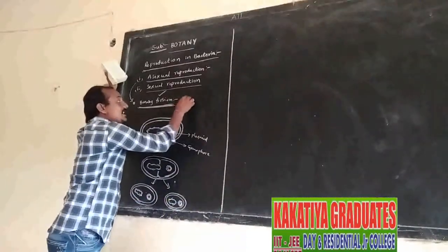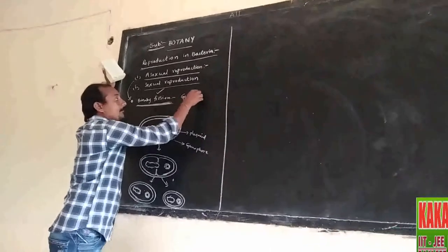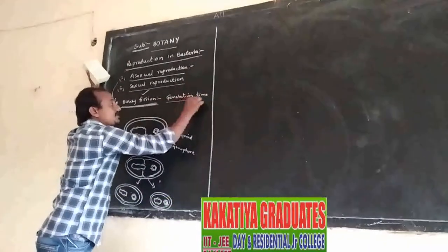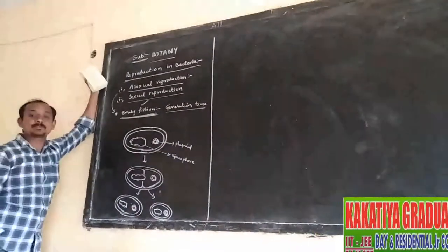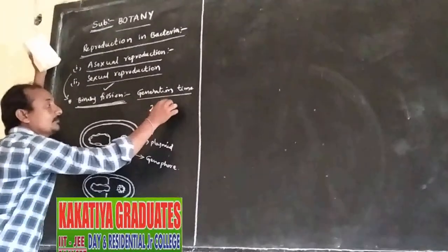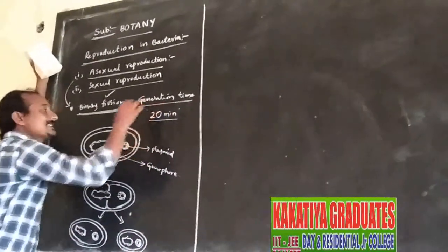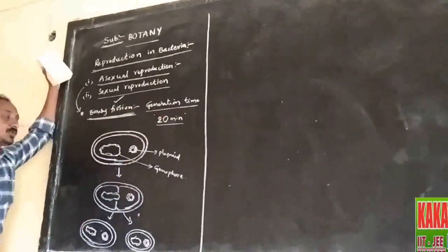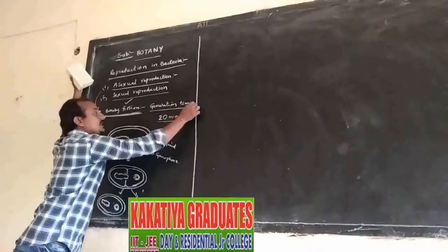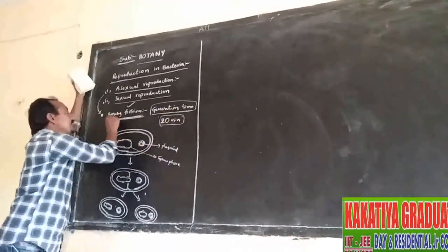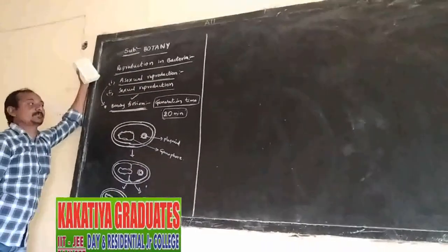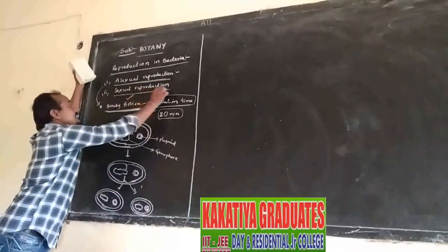The time taken for this cell division is called generation time. The generation time in a bacterial cell is 20 minutes. Each bacterial cell produces two daughter cells. This is binary fission, or asexual reproduction.